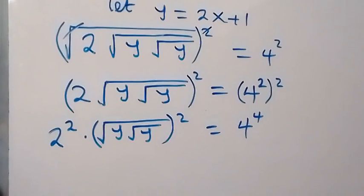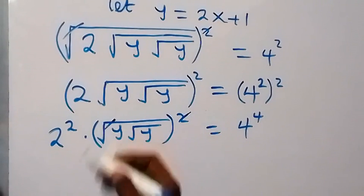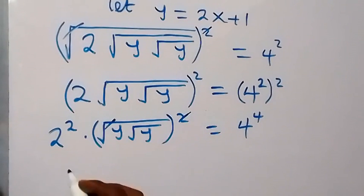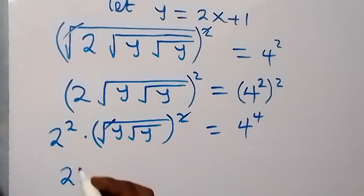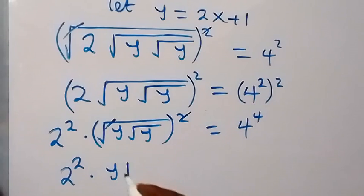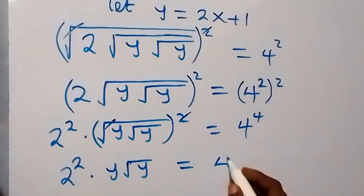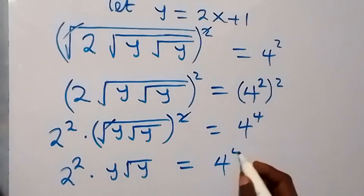Then next step: this cancels each other and what we have left here is 2 squared times y times root y, equals to 4 raised to power 4.